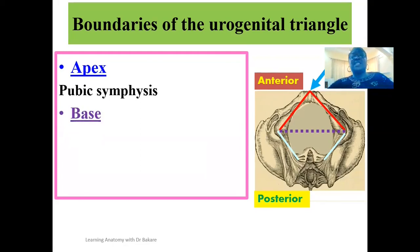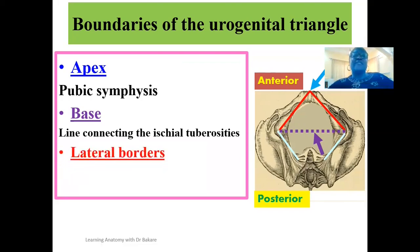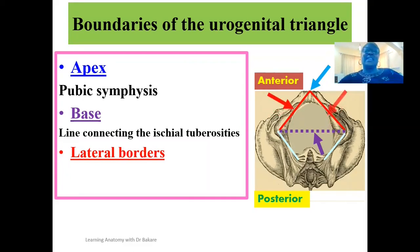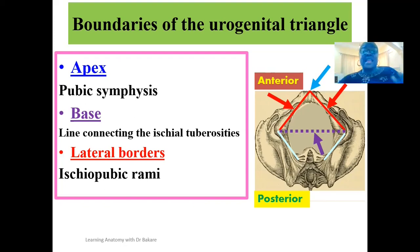We also have the base, because a triangular space would have both an apex and a base. This base, elected here in purple, is created by the imaginary line that runs from one ischial tuberosity to the other. Finally, we have the lateral borders — two lateral borders, one on the right and one on the left. These two lateral borders are formed by the ischiopubic rami: the ischiopubic ramus on the right and another on the left. These two rami form the lateral borders of the triangular space referred to as the urogenital triangle.